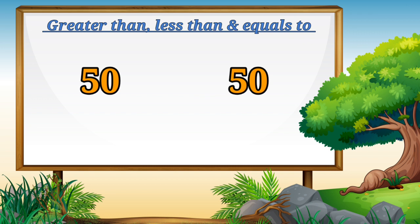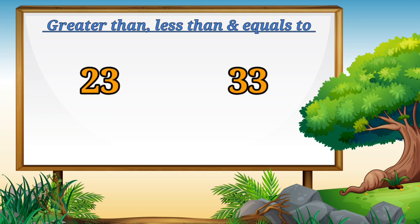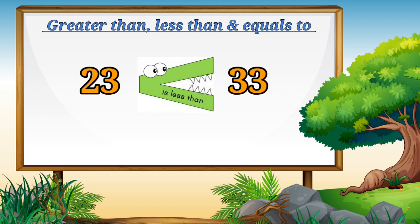Next example, we have number 50 and 50. Which side is the greater number? Both sides have the same number, that is number 50. So children, which side do you think Mr. Coco will use? Equals to, right? Therefore, number 50 is equal to number 50. Next example, we have number 23 and 33. Tell me children, which side do you think Mr. Coco will open his mouth? Very good — Mr. Coco will open his mouth towards the right side. Why? Because number 33 is greater than number 23.